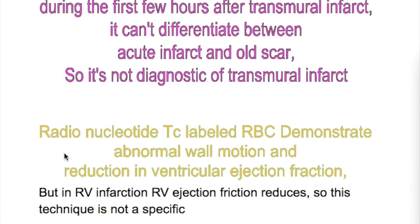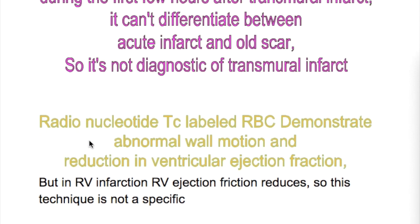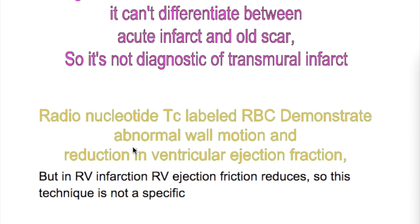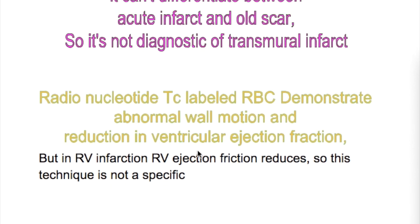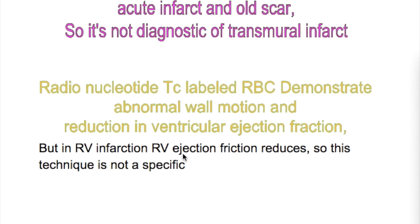The next test is radionuclide technetium-labeled RBC. This demonstrates abnormal wall motion and a reduction in ventricular ejection fraction. In right ventricular infarction, right ventricular ejection fraction is also reduced.